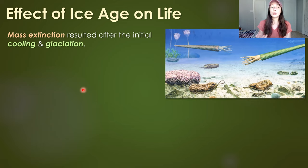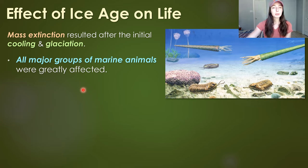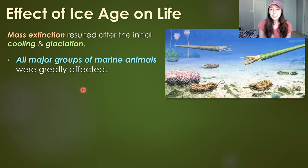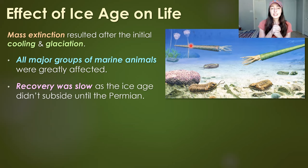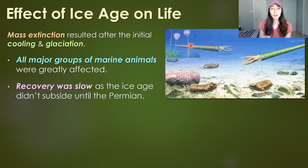Unfortunately, the ice age caused a mass extinction — not one of the big five we recognize throughout Earth's history, but a mass extinction nonetheless. It was directly due to the cooling and glaciation, because any abrupt change — cooling or warming — tends to cause life that can't adapt to go extinct. This mass extinction hit mostly marine life. During the Carboniferous, life was only just getting its footing on land anyway, so there wasn't much land life to devastate.